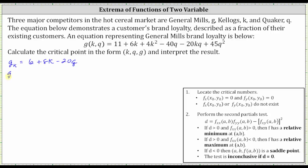Now we need to find the partial of g with respect to q. We differentiate g with respect to q, treating k as a constant, which gives us zero plus zero plus zero minus 40 minus 20k plus 90q, or negative 40 minus 20k plus 90q.